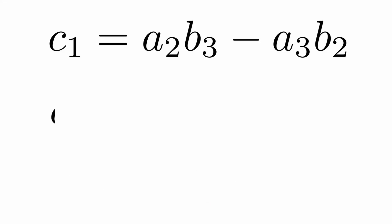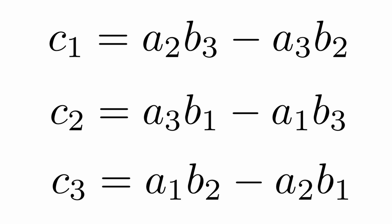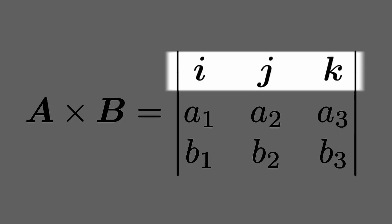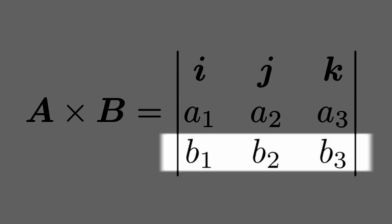The other two components can be found in the same way. We get c sub 2 is equal to a sub 3 times b sub 1 minus a sub 1 times b sub 3, and c sub 3 is equal to a sub 1 times b sub 2 minus a sub 2 times b sub 1. The cross product is usually remembered as the determinant of a 3 by 3 matrix, with the unit vectors i, j, and k in the first row, the components of a in the second row, and the components of b in the third row.